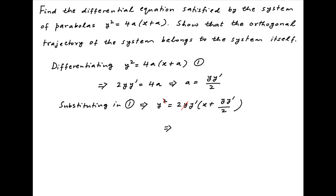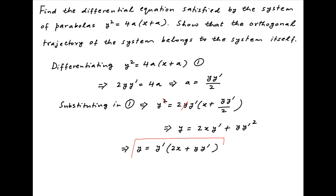The y cancels across both sides, giving y = 2x·y' + y·(y')². In other words, y = y'·(2x + y·y'). This is the differential equation satisfied by the given system of parabolas. Let's denote this as Equation 2.